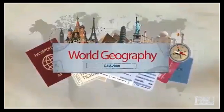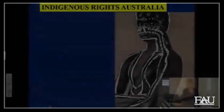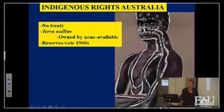So here we go, World Geography, Part 6. Looking at indigenous rights — this is about Aborigines. We're talking about Australia.